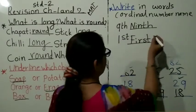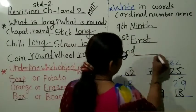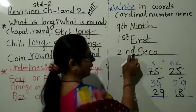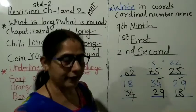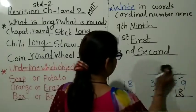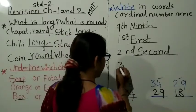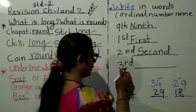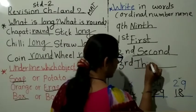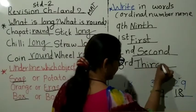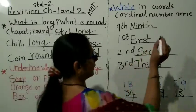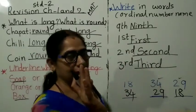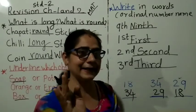Now third - 3, R-D means T-H-I-R-D, third. Here I am writing: 3rd means third, T-H-I-R-D. And tenth - 10th means T-E-N-T-H, tenth. Like that.